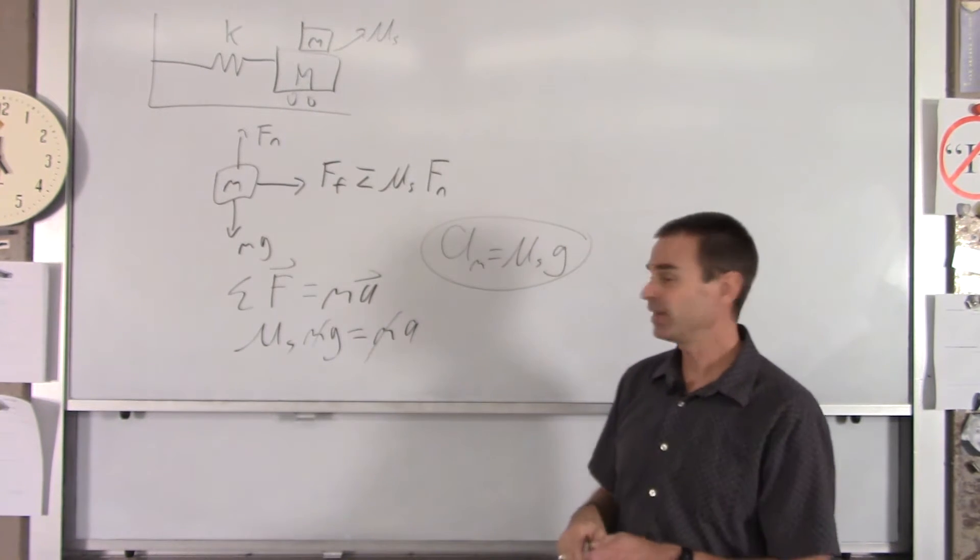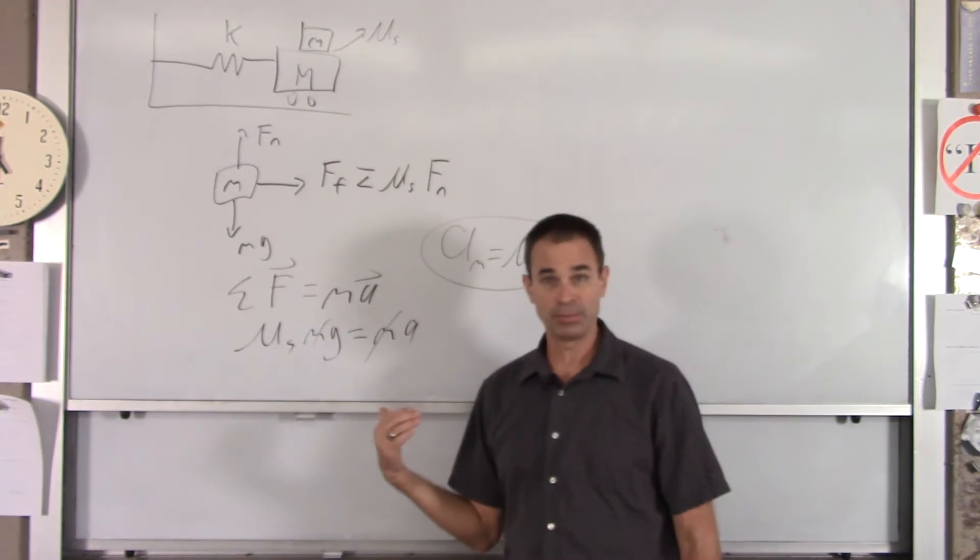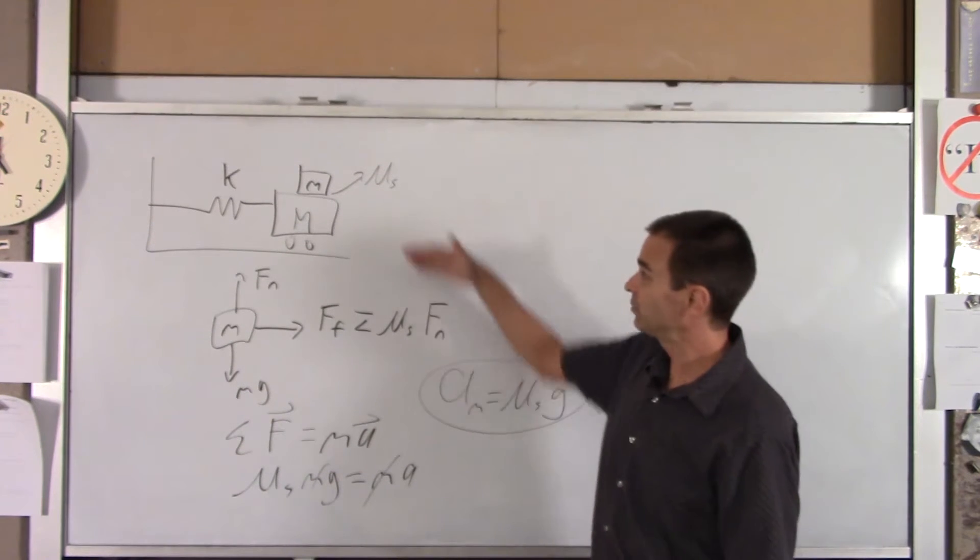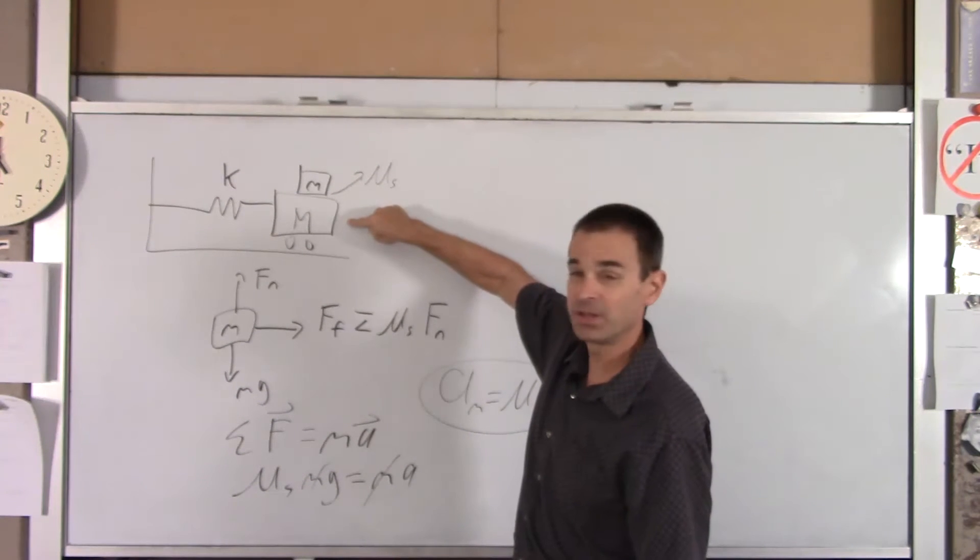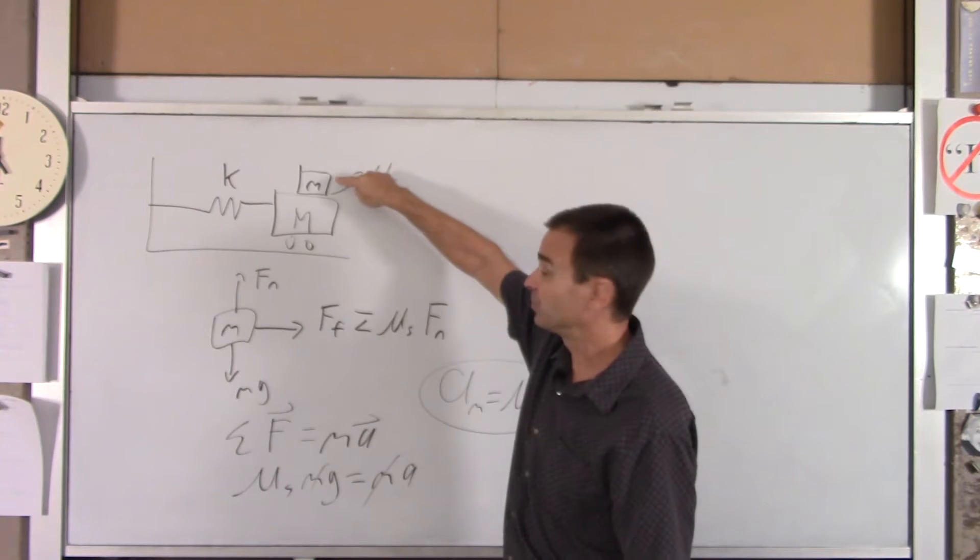Our max acceleration is mu sub s times g. Now, we didn't ask you for that, but you need that to do the problem. So that's the maximum acceleration this dude can have and not let this dude slip.